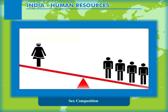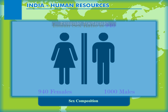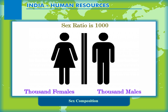Sex ratio means the proportion of males and females in the total population. It is defined as the number of females per thousand males in the population. In India, the sex ratio is 940, which implies that there are 940 females per thousand males. This figure suggests that the sex ratio is not favourable to females. This unfavourable sex ratio is due to female infanticide, female feticide, preference given to boys, lack of healthcare facilities for women, etc. If the sex ratio of a country is 1000, it suggests that the total number of males and females is equal, which is a good situation as far as the growth rate is concerned.